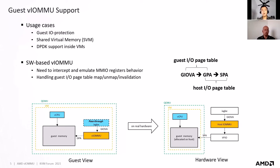In the example below, we have a 10-gig NIC pass-through device running inside a VM, and there is a virtual IOMMU in the VM that manages this device. From the guest's point of view, the pass-through device's IOMMU will retranslate to guest PA. But when you run this model on real hardware, the 10-gig NIC is managed by the host IOMMU. In this case, the host IOMMU page table needs to do the retranslation from guest IOMMU to SPA. This is very similar to shadow IOMMU paging.